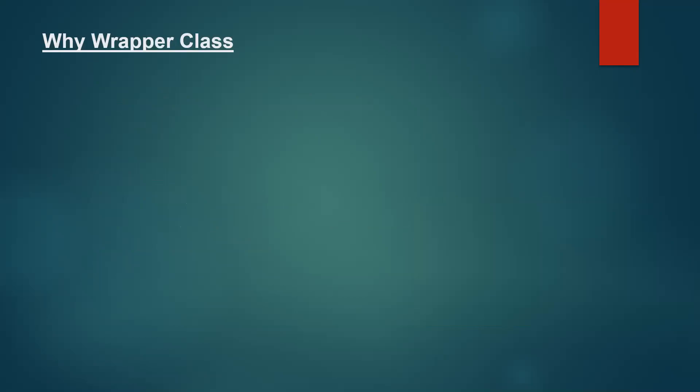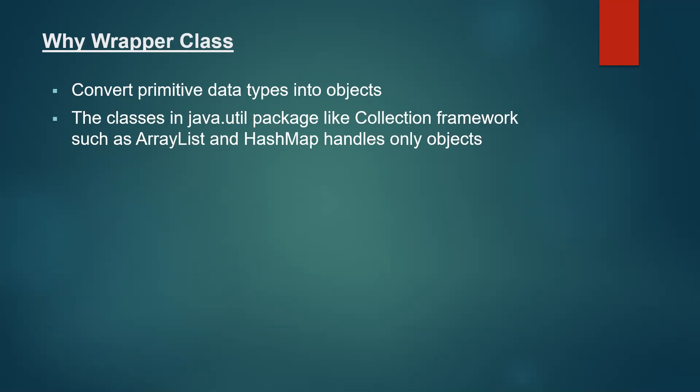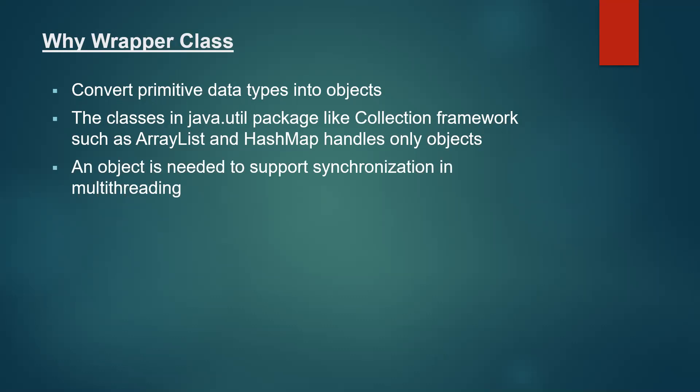Now, why do we need a wrapper class if we already have primitive data types? There are some reasons. First, we can convert primitive data types into objects. Classes have methods, and we can create objects and call those methods for specific operations. Second, classes in the java.util package like the collection framework — ArrayList, HashMap, HashSet, and so on — handle only objects, so we need wrapper classes there as well. Third, objects are required to support synchronization in multithreading, which does not support primitive data types, so wrapper classes are needed there too.